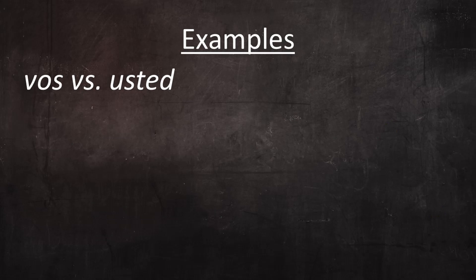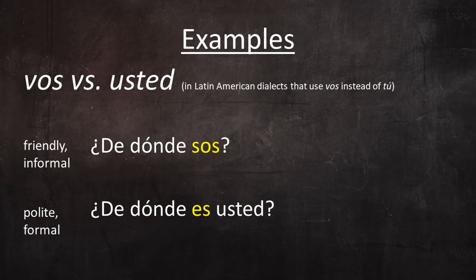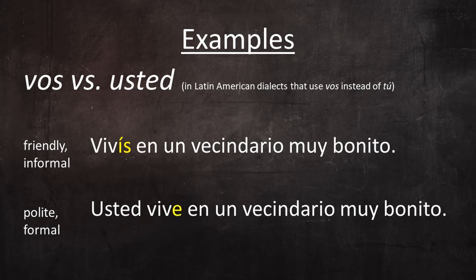In those Latin American dialects that use vos instead of tú, vos has the same semantic and sociocultural value as tú. In those dialects, usted is still used as the formal form — so just as in the previous examples, the contrast here is between informal and formal. Examples: ¿De dónde sos? / ¿De dónde es usted? — ¿Sabes manejar un automóvil? / ¿Sabe usted manejar un automóvil? — Vivís en un vecindario muy bonito. / Usted vive en un vecindario muy bonito.